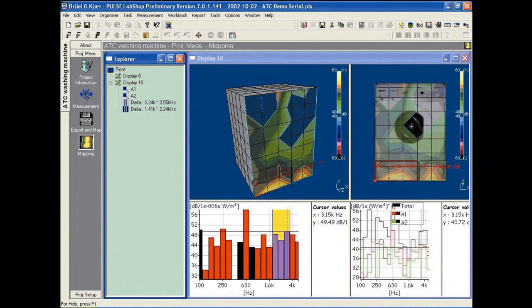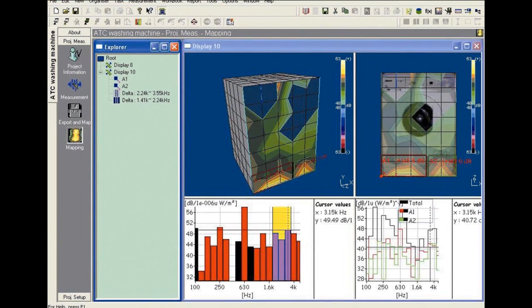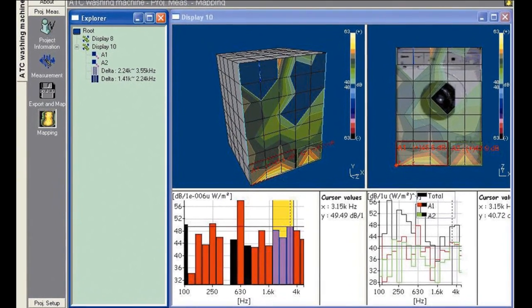One can also divide the measured surface into regions to determine the sound power of the individual areas relative to the overall sound power. This helps the manufacturer to decide where to concentrate the noise reduction efforts.